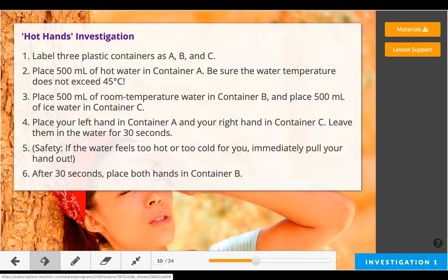Put hot water in container A. Make sure that the temperature doesn't exceed 45 degrees Celsius. You are going to put your hand in it, so make sure it's not so hot that it would burn your hand. Then place an equal amount of room temperature water in container B and the same amount of ice water in container C, so a combination of ice and water. Place your left hand in container A and your right hand in container C. Leave them in the water for 30 seconds.